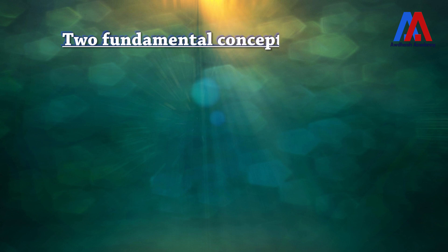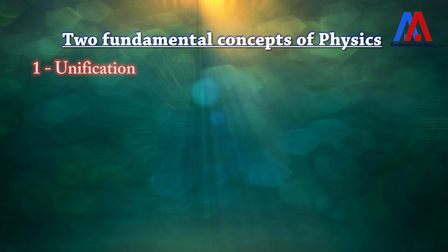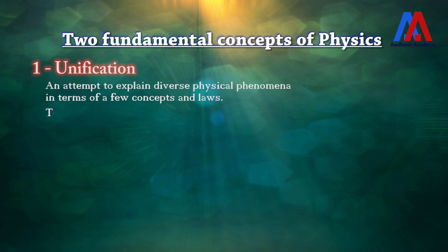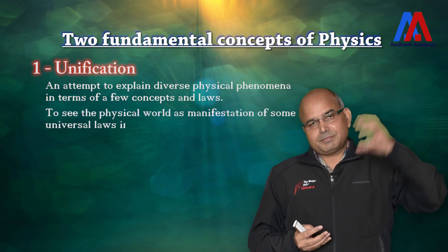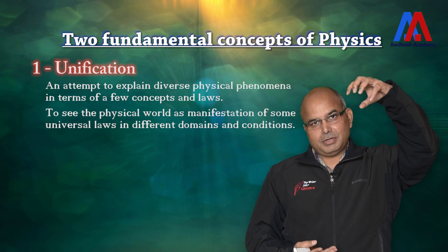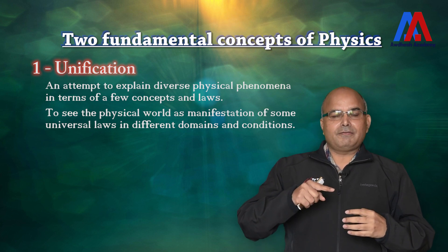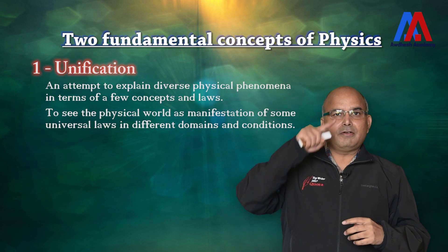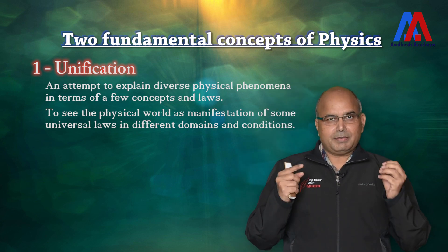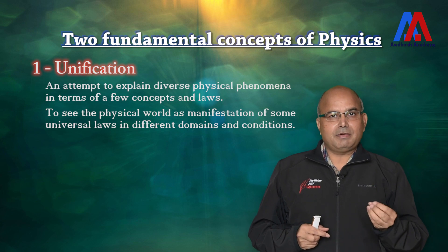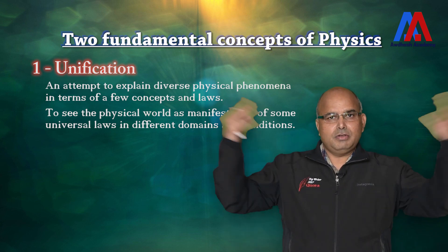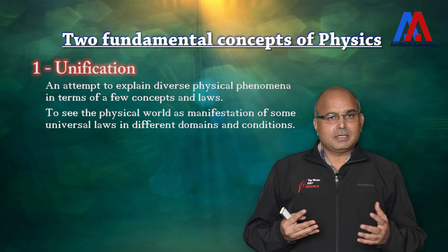In scientific investigation there are basically two types of fundamental concepts. The first is called unification. Unification means explaining diverse physical phenomena in terms of a few concepts or laws. For example, the law responsible for attracting the apple to earth is the same law of gravitation used to define the movement of earth around the sun and the movement of the moon around the earth — a single law with universal application. That is unification.